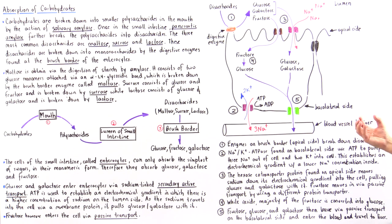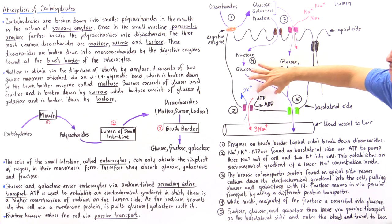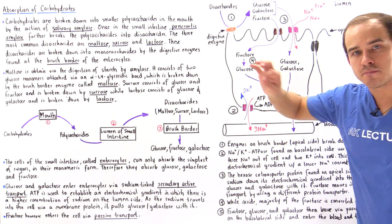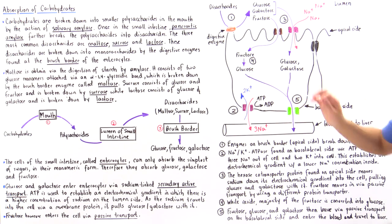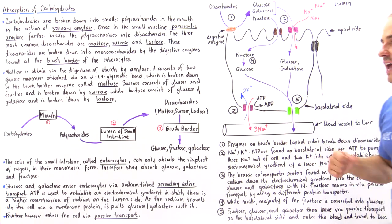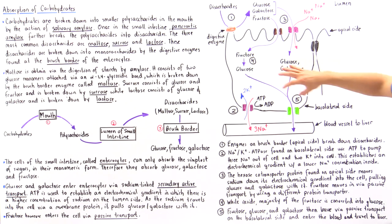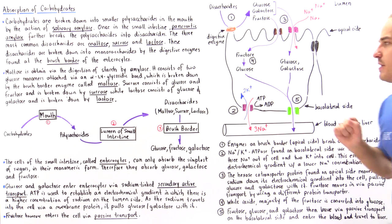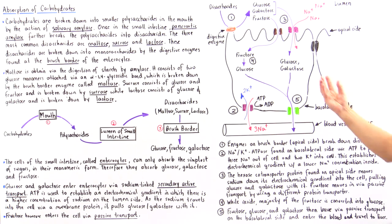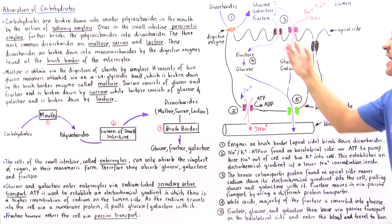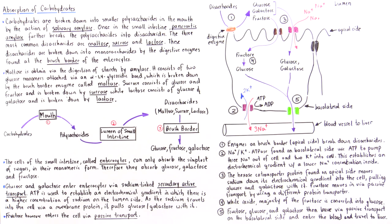On the basolateral side, we have specialized sodium-potassium ATPase pumps that establish an electrochemical gradient by using ATP molecules, creating a lower concentration of sodium inside the cell.